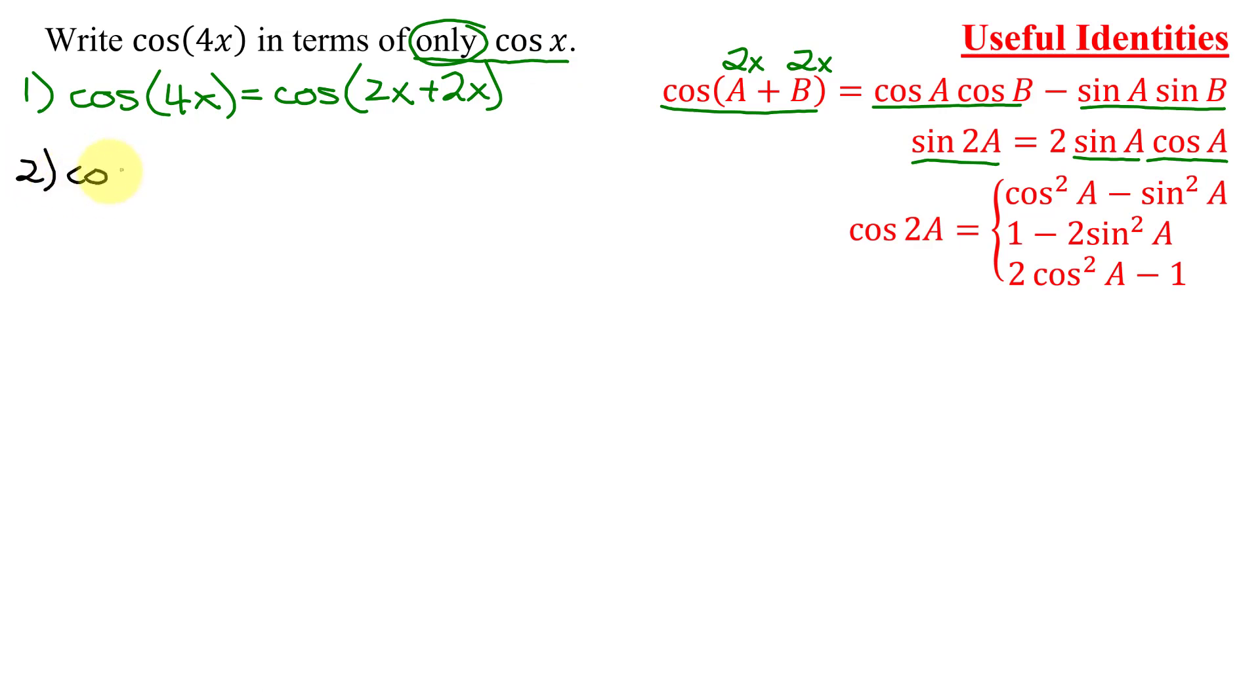I'm going to take the cosine of 4x. And 4x I'm going to write as 2 times 2x. And now I can use the double angle identity for the cosine function. It has three different options and one of them just contains the cosine of the angle. So that's what I want to use.